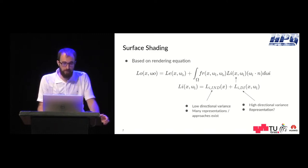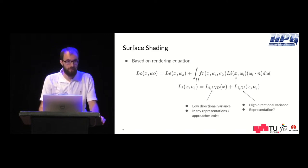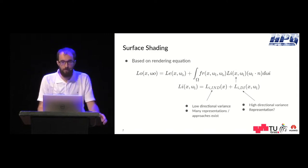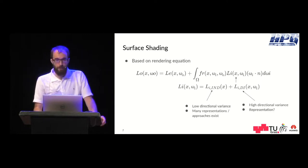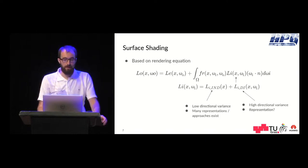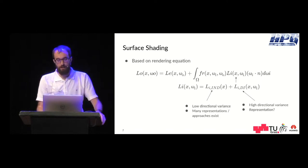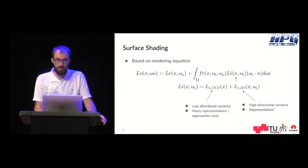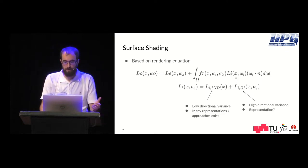For the indirect illumination many approaches exist due to the low directional variance. You can use spherical harmonics and this kind of stuff, but for direct illumination the data is very highly directional dependent, so it's not easy to express and our question is if we can find a representation to express this kind of data.